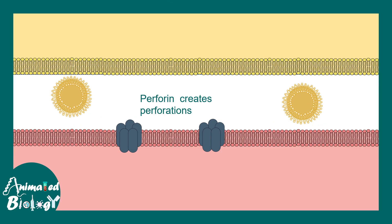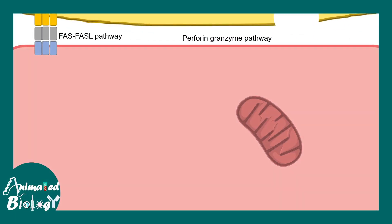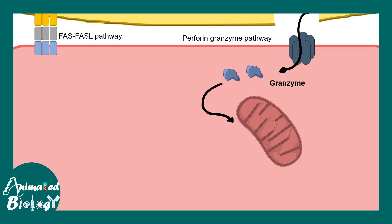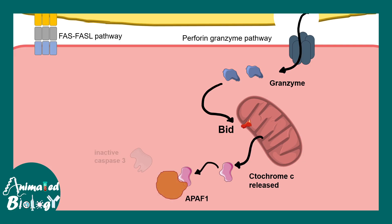The secreted vesicles contain perforin, which, as the name suggests, creates perforations in the host cell membrane, forming channels through which granzyme can enter. Once inside, granzyme alters mitochondrial membrane permeability, leading to activation of apoptotic proteins like BID. BID causes leakage of cytochrome c into the cytosol, which interacts with Apaf-1 and ultimately activates inactive caspase 3. Caspase 3 is the executor caspase — once activated, the game is over and it initiates the destruction of the cell.